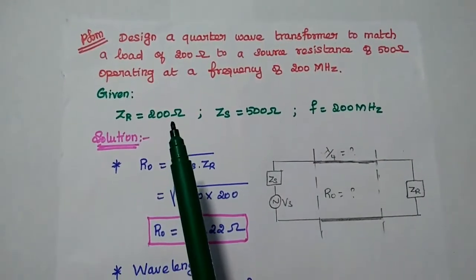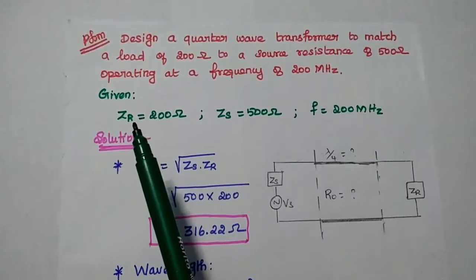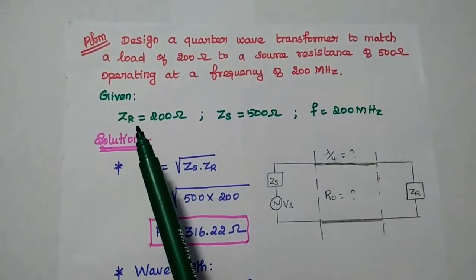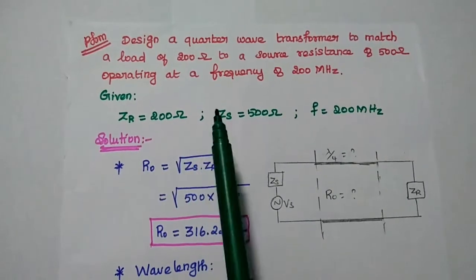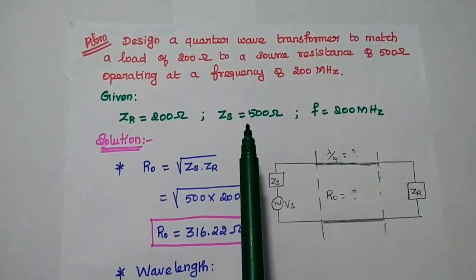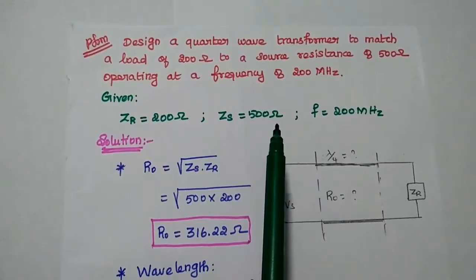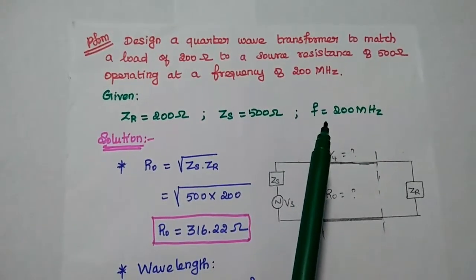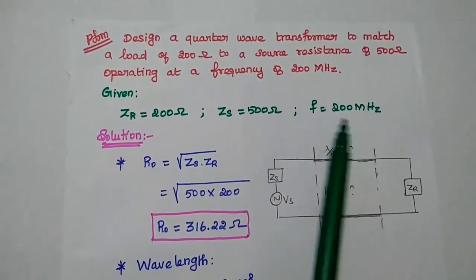First we have to write the given data. The load impedance ZR is equal to 200 ohm. The source resistance ZS is equal to 500 ohm. And the frequency f is equal to 200 MHz.